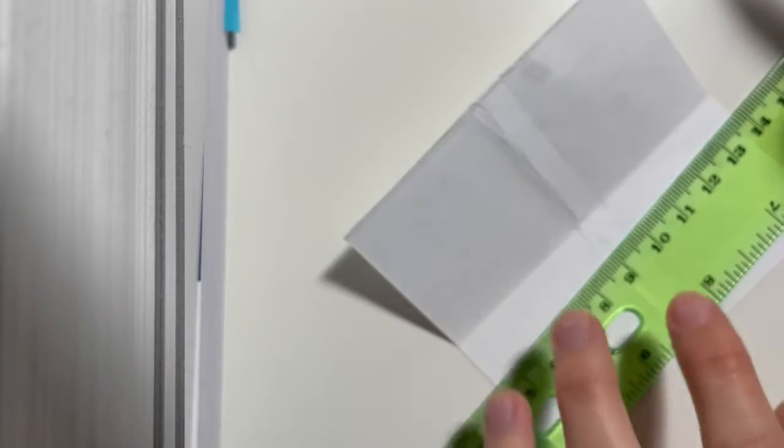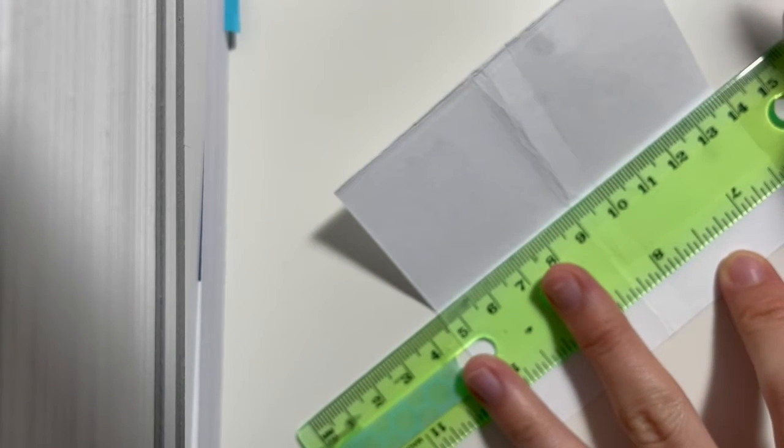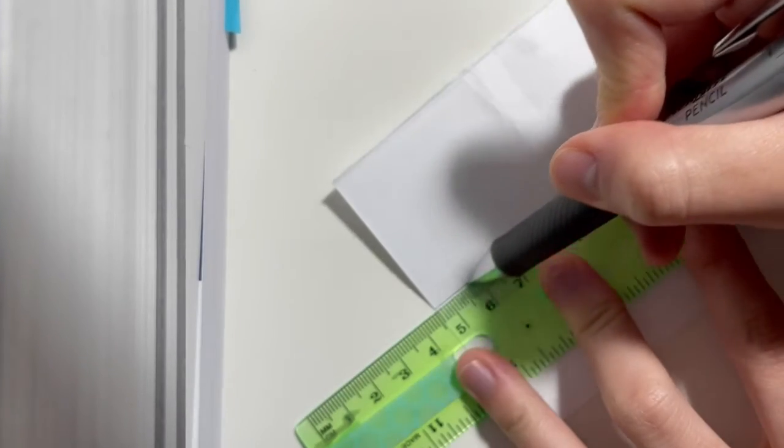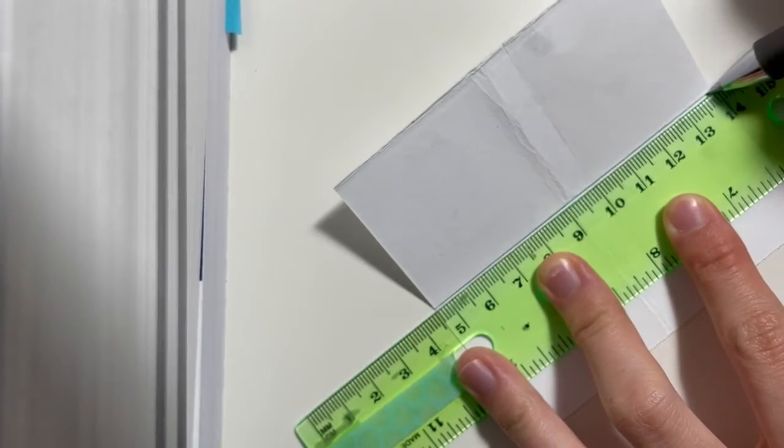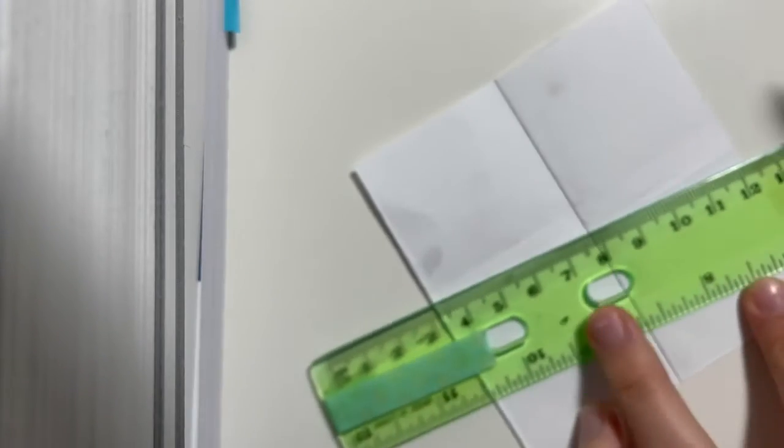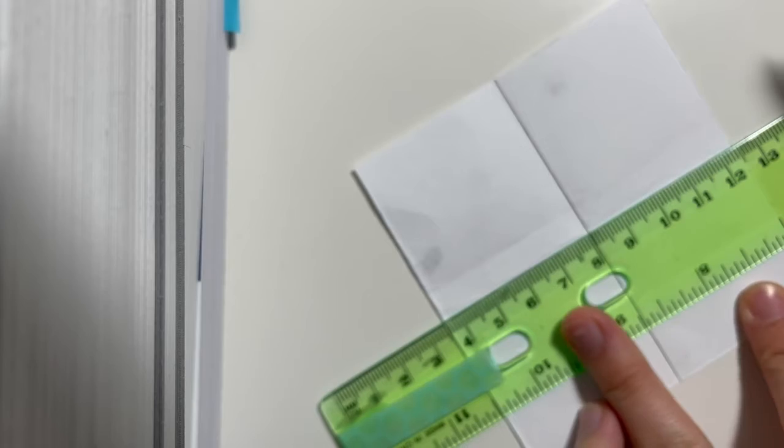So you're going to trace down the middle of your fold to create a line, so we're going to go ahead and do that. Okay, and then we're going to turn it the other way and draw another line. Okay, perfect.